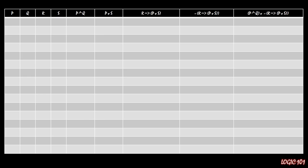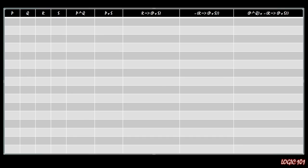The first thing you do in a truth table, as always, is to create every single combination of truth values for the simple sentences. You start with the first simple sentence and go halfway down with trues — so there are eight trues here — and then go false with the rest. So we have eight trues and eight falses.